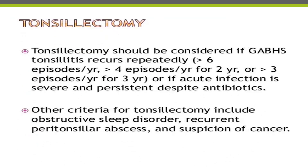Tonsillectomy should be considered if Group A beta-hemolytic streptococcus tonsillitis recurs repeatedly — that means greater than six times per year, or greater than four episodes per year for two years, or greater than three episodes per year for three years — or if acute infection is severe and persistent despite antibiotics. Other criteria for tonsillectomy include large tonsils causing obstructive sleep apnea, recurrent peritonsillar abscess, and suspicion of possible malignancy.